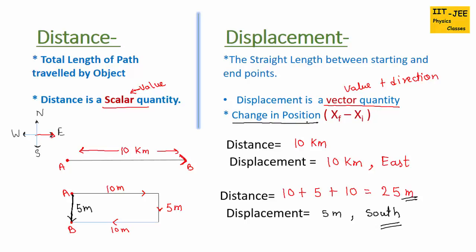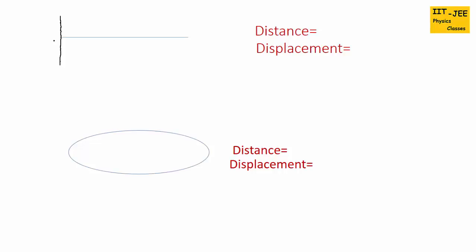There is another definition of displacement: change in position. Change in position is also called displacement. If we know the positions of the starting point and ending point, we just subtract them. Here xf is the position of the final point and xi is the position of the initial point. So if we know the positions of A and B, we subtract the position of A from position of B to get the displacement.